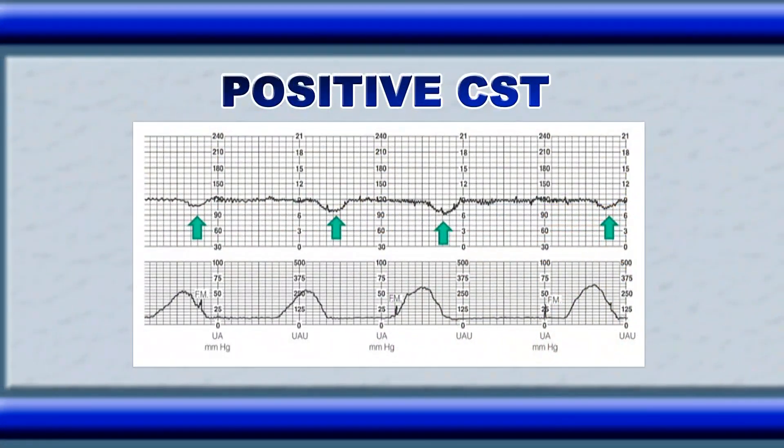Here we will see a positive contraction stress test result with the help of a strip. We can see repetitive late decelerations occurring with each contraction. Note that there are no accelerations of fetal heart rate with the three fetal movements. The baseline fetal heart rate is 120 beats per minute, and uterine contractions occur 4 times in 12 minutes.